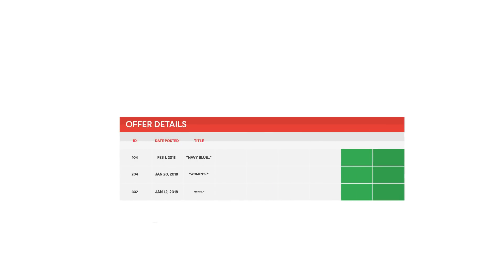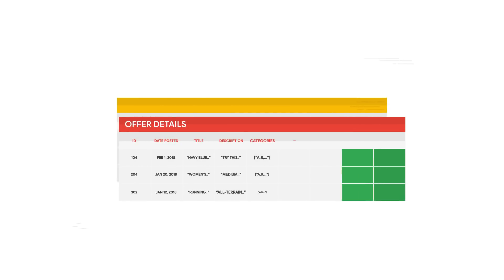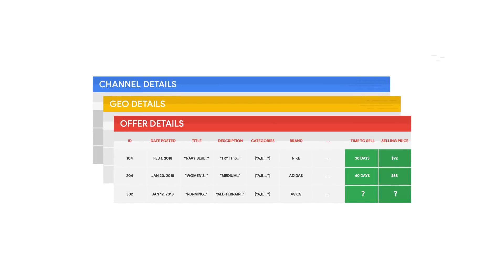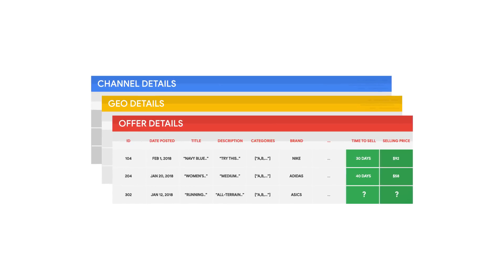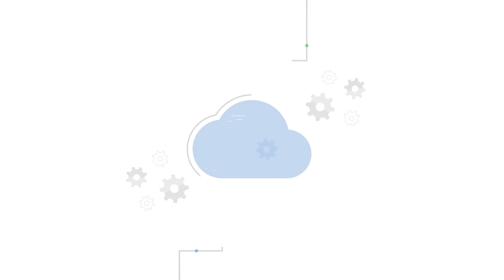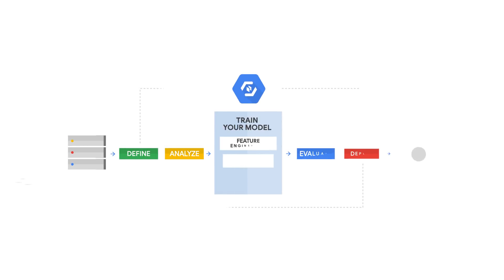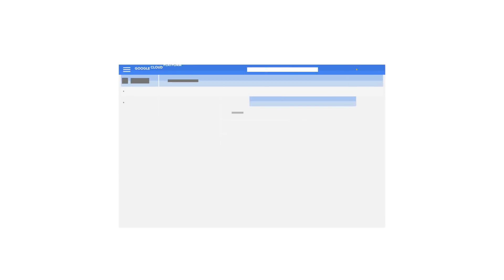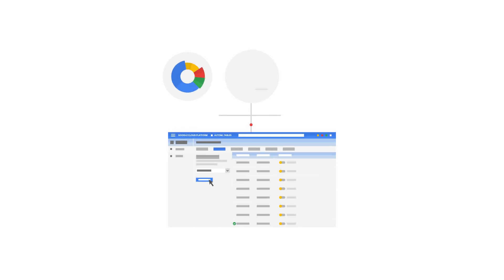Imagine you had a tabular dataset with data primitives such as numbers, classes, strings, timestamps, lists, and nested fields. You can now use it to train custom ML models without writing a single line of code. Our graphical interface guides users through the full end-to-end machine learning lifecycle, making it easy for anyone on your team to build models and reliably incorporate them into broader applications.